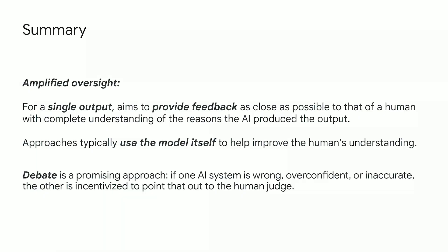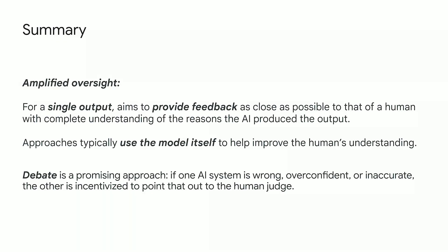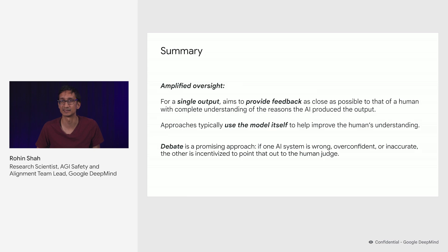To summarize this section on amplified oversight: Amplified Oversight is the area of work which, for a single output, aims to provide feedback as close as possible to that of a human with complete understanding of the reasons that the AI produced the output. Approaches will typically utilize the model itself to help improve the human's understanding, thus amplifying their oversight. Debate is one example of a promising approach, since it incentivizes the AI systems to point out flaws to the human judge. Thanks!